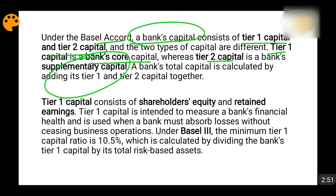Tier 1 capital consists of shareholders' equity and retained earnings. Shareholders' equity refers to when a company lists itself on the stock exchange through an initial public offering, introduces its shares in the market, and people purchase those shares — that capital goes to the bank, which the bank uses for investment and expansion. Whatever any person is investing in that particular bank becomes the core capital of the bank.